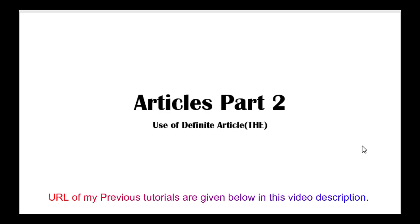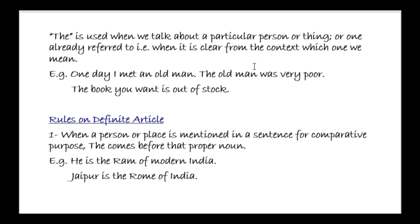Now before I move to the rules, first of all we need to understand what a definite article is and what things we need to keep in mind when solving questions related to the definite article 'the'. As I have written here: 'the' is used when we talk about a particular person or thing, or one already referred to — that means when it is clear from the context which one we mean.